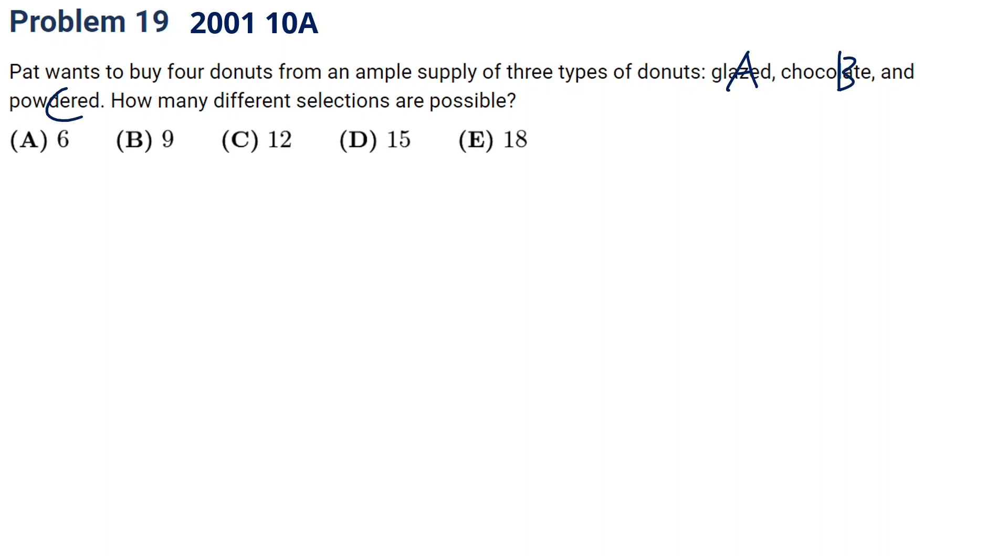We want to buy four donuts total. The four donuts can be any combination of A, B, or C - there are no other restrictions. How many different selections?